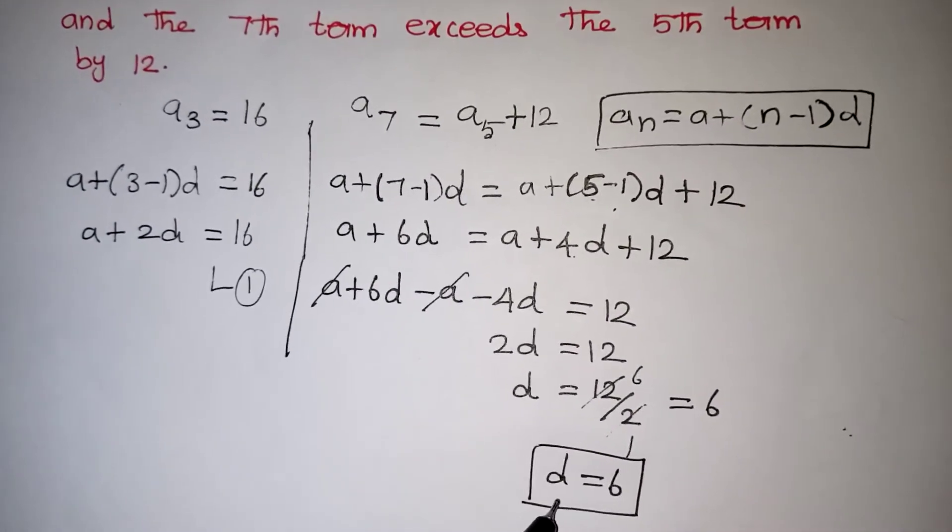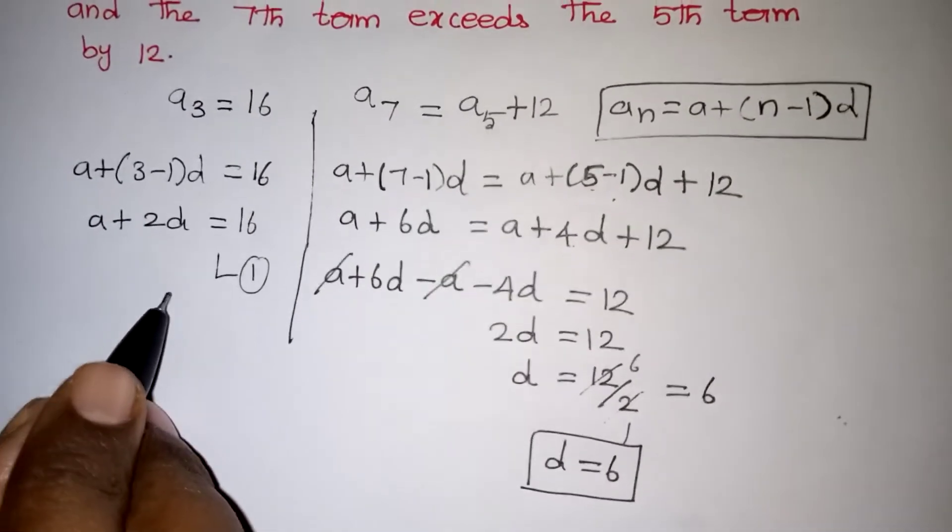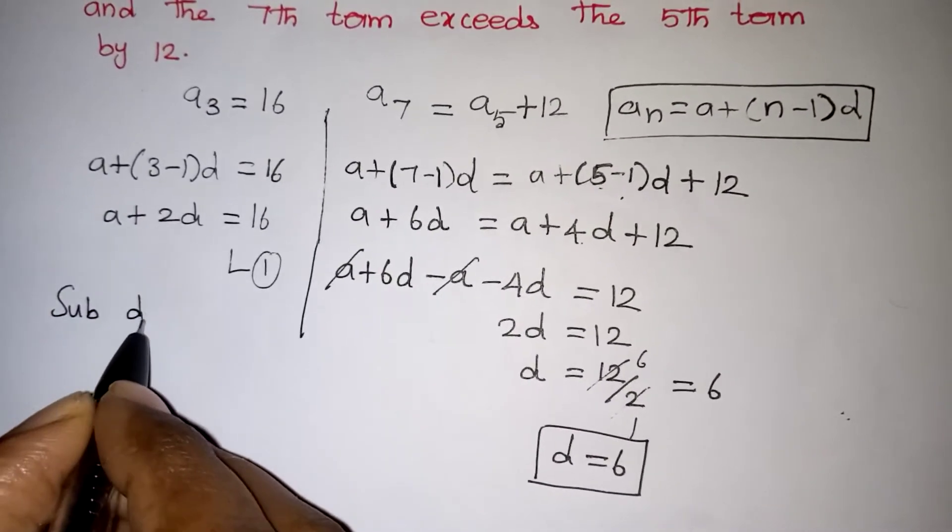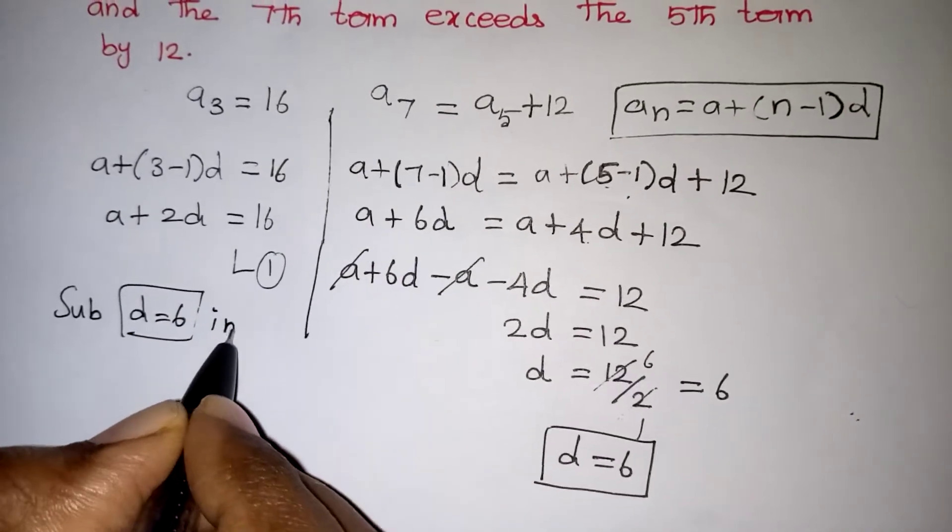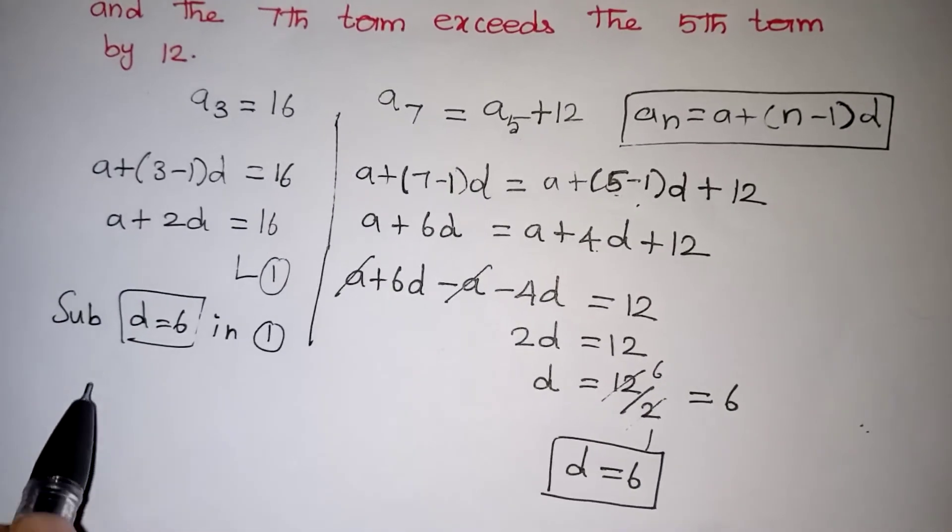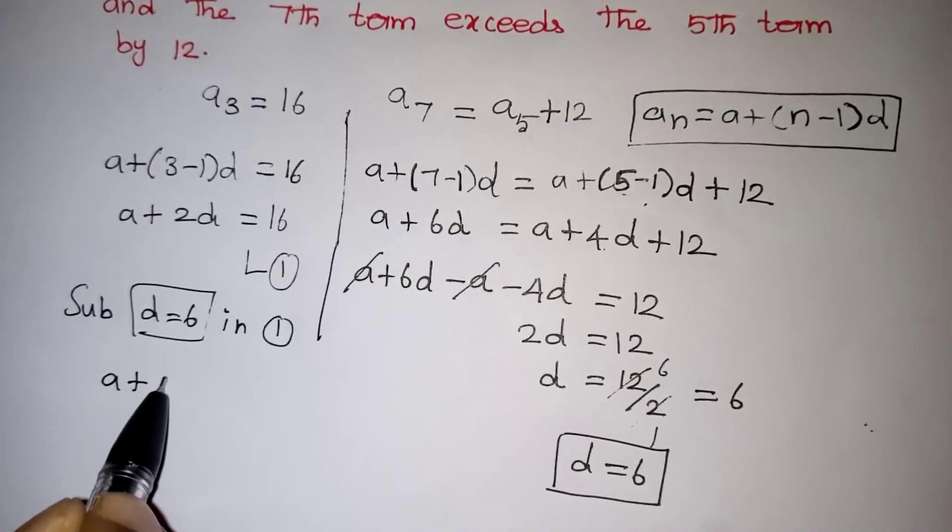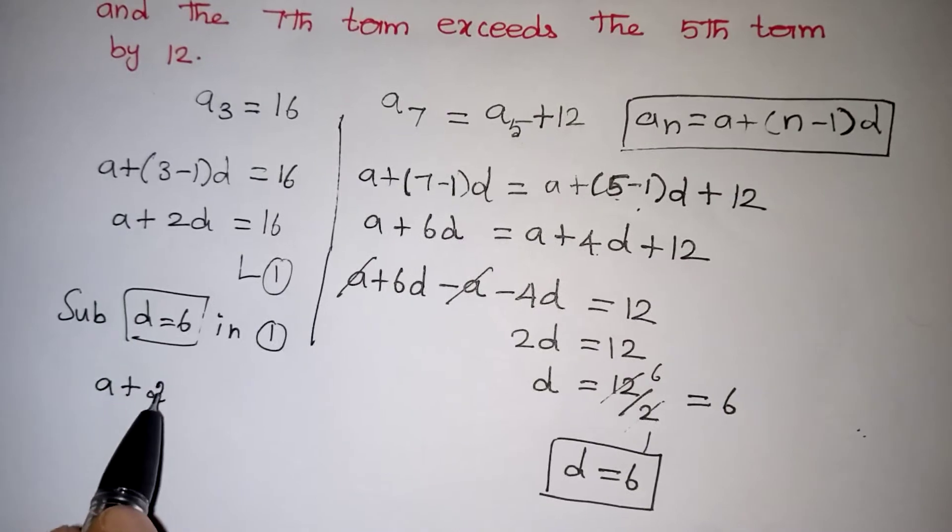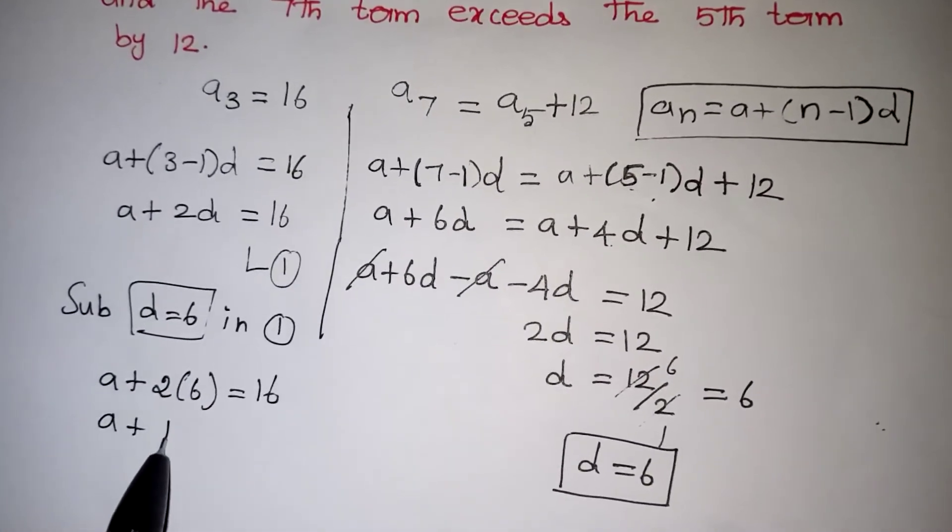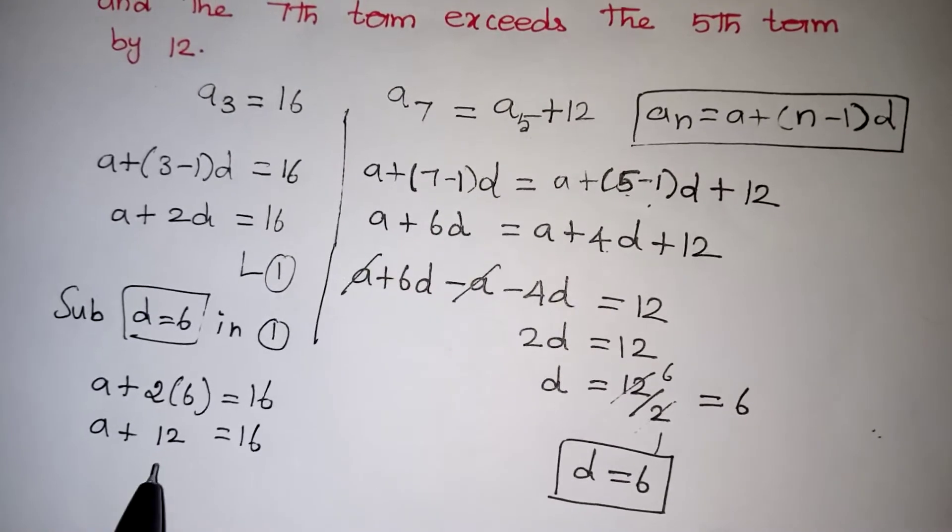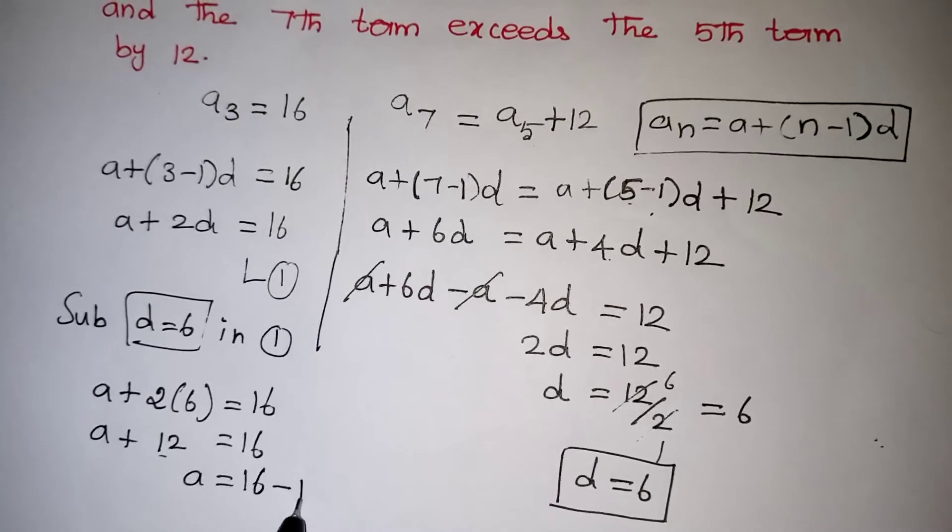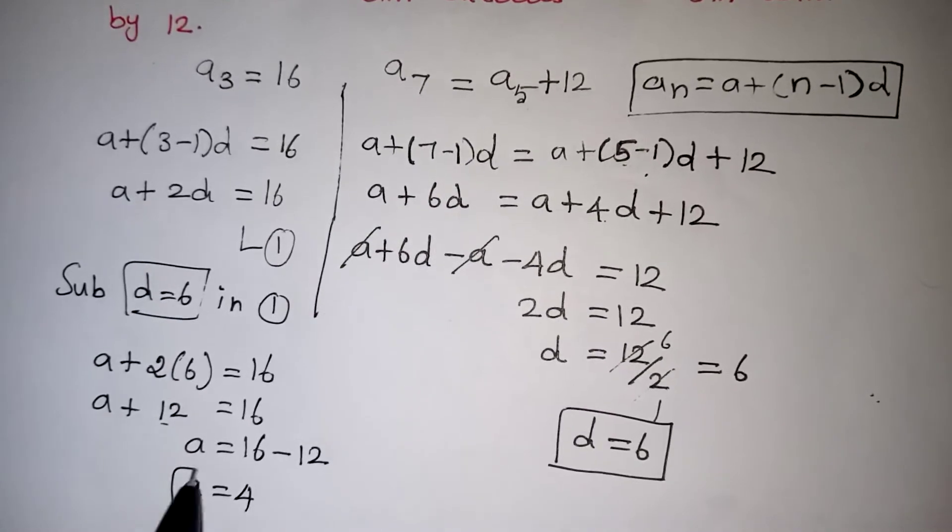Now we need to substitute the D value in the first equation to get the A value. Substitute D equals 6 in the first equation. Write A as it is, plus 2 into D value 6, which equals 16. A plus 12 equals 16. Plus 12 taken to the other side becomes minus 12. 16 minus 12, so A equals 4.